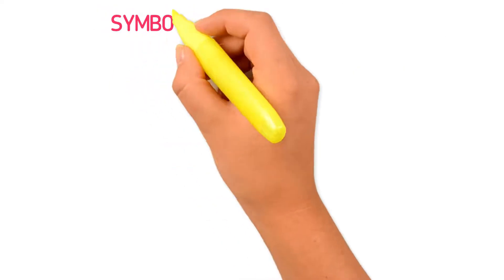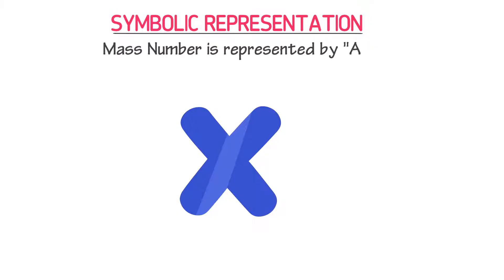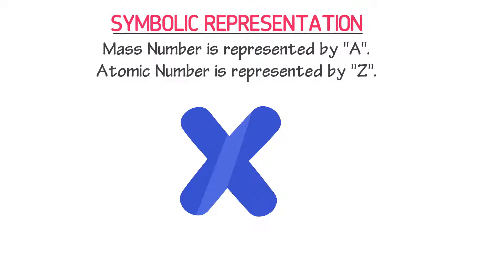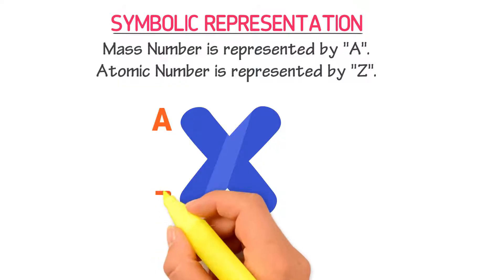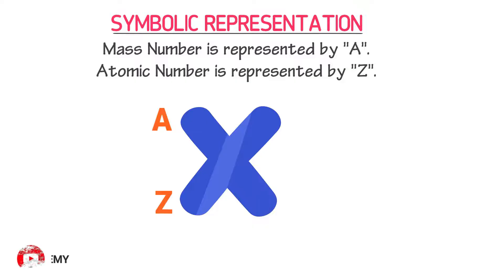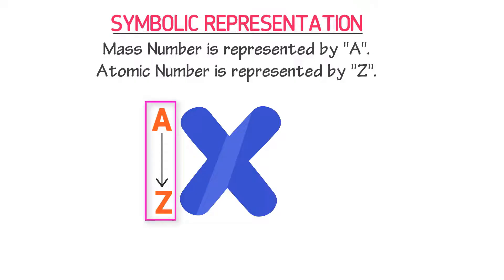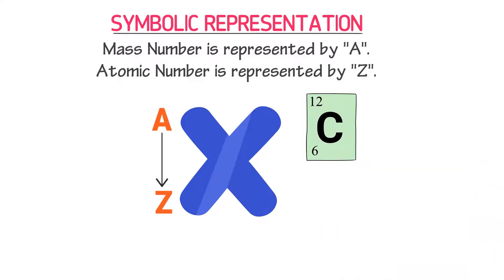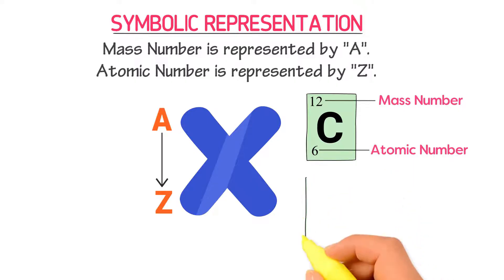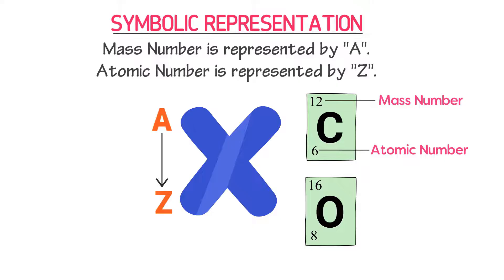Let me teach you the symbolic representation of atomic number and mass number. Consider a general atom X. Mass number is represented by A and atomic number is represented by Z. We write mass number at the top and atomic number at the bottom. The mnemonic I teach my students is: always remember A to Z. For example, carbon is written with 12 as the mass number and 6 as the atomic number. Similarly, oxygen has 16 as the mass number and 8 as the atomic number.